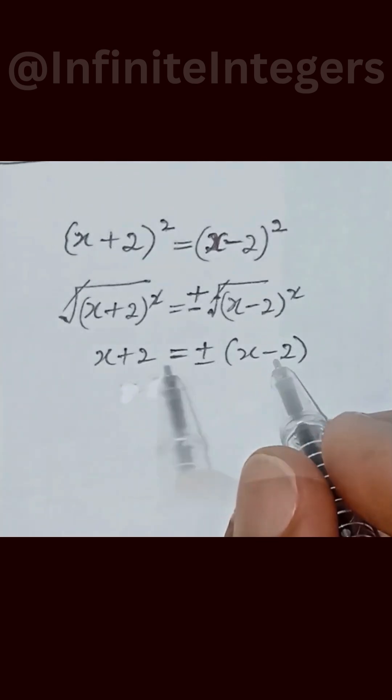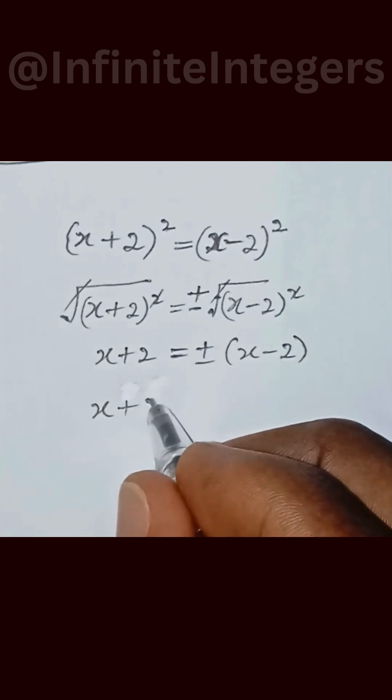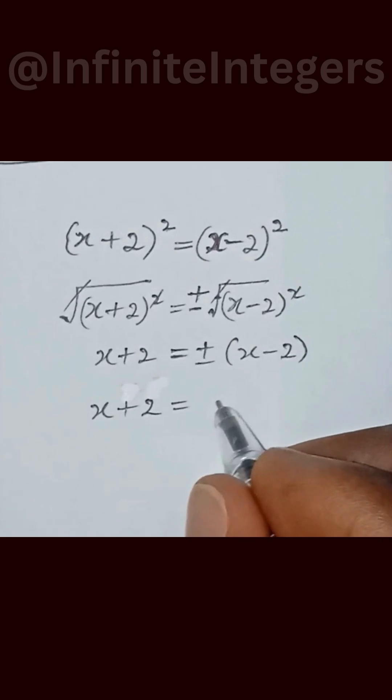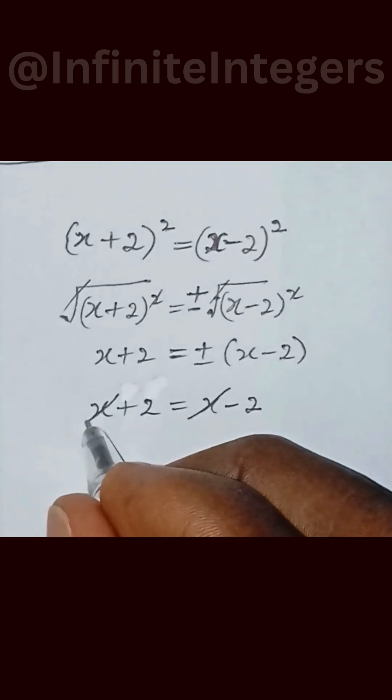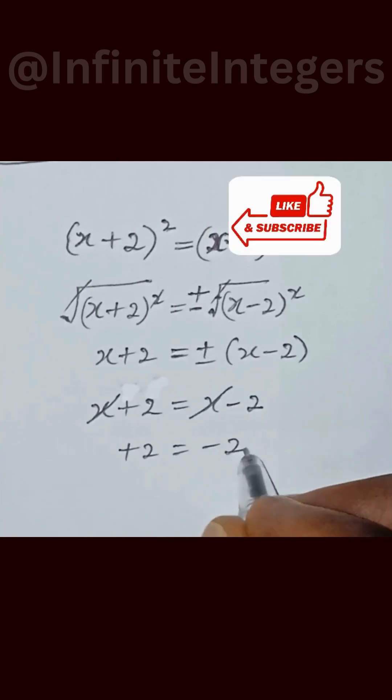We have that to be equal to x plus 2 equal to x minus 2. So this cancel out with this. So we have plus 2 equal to minus 2.